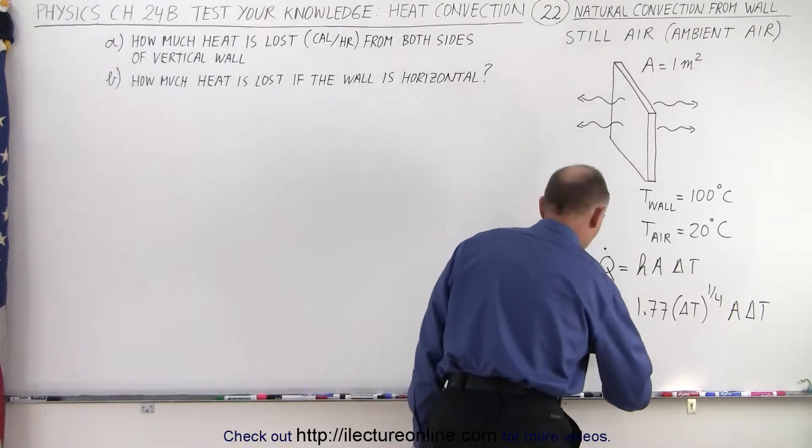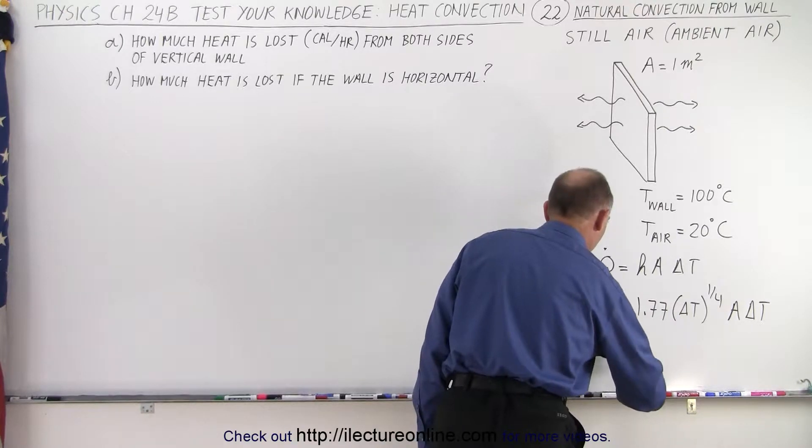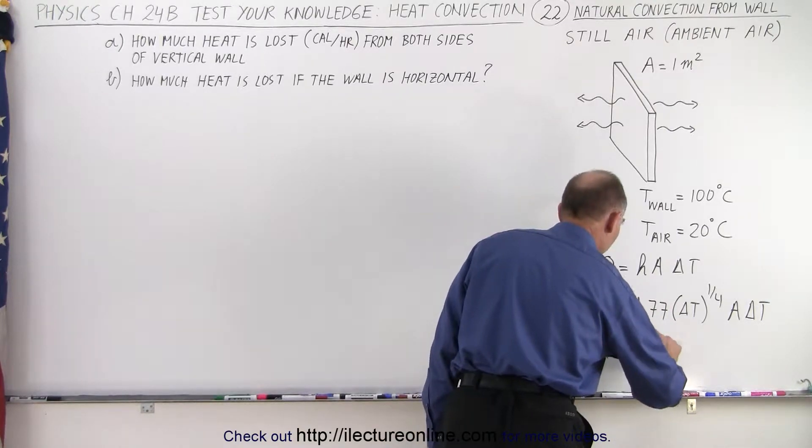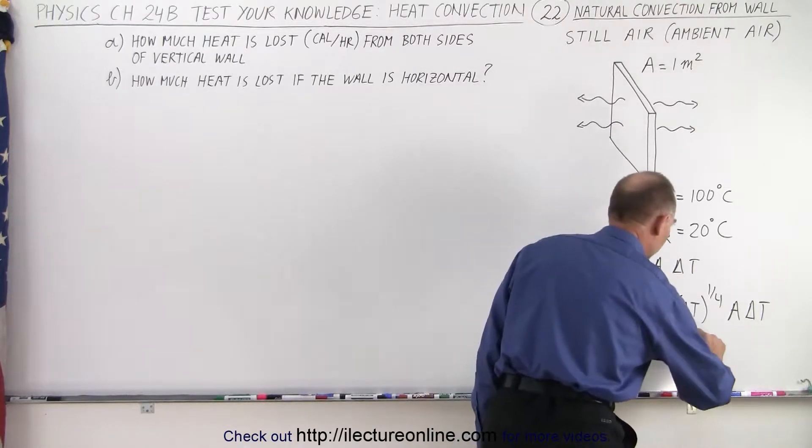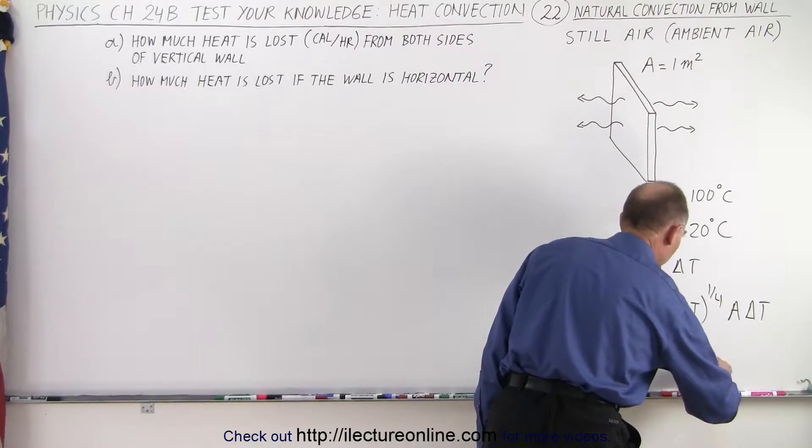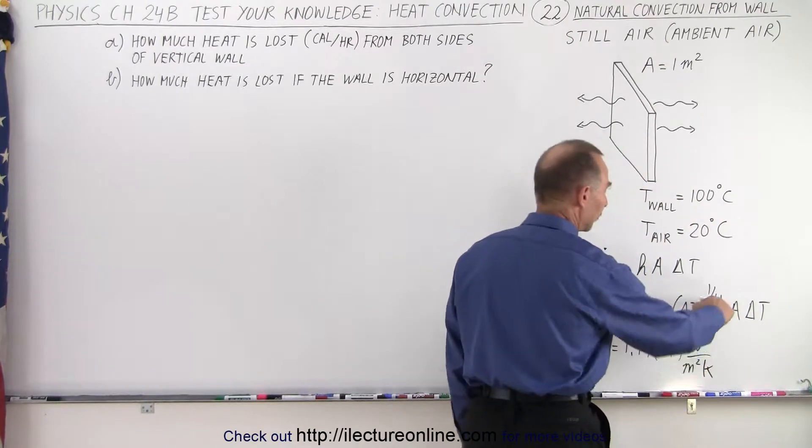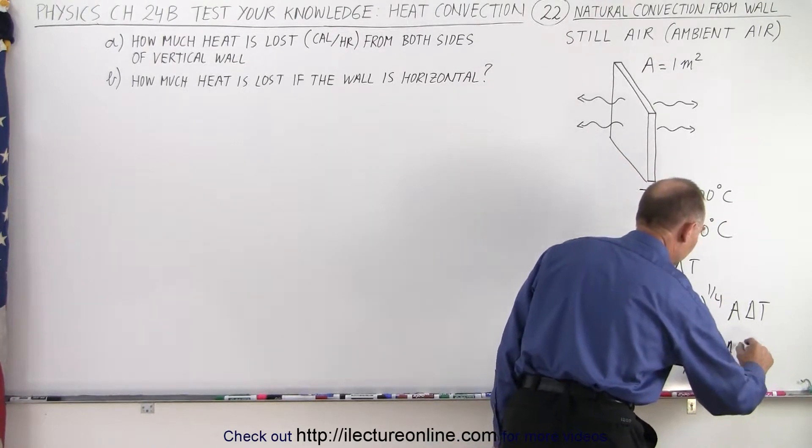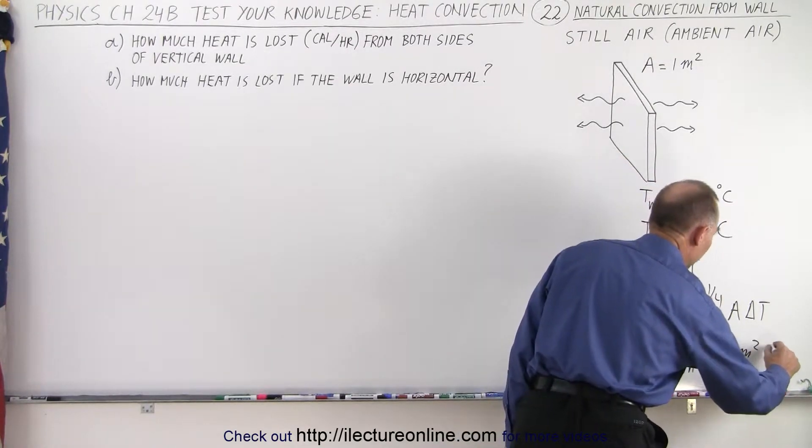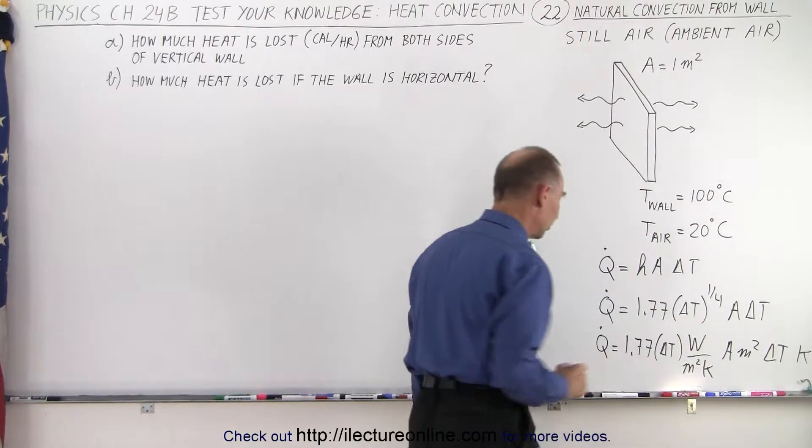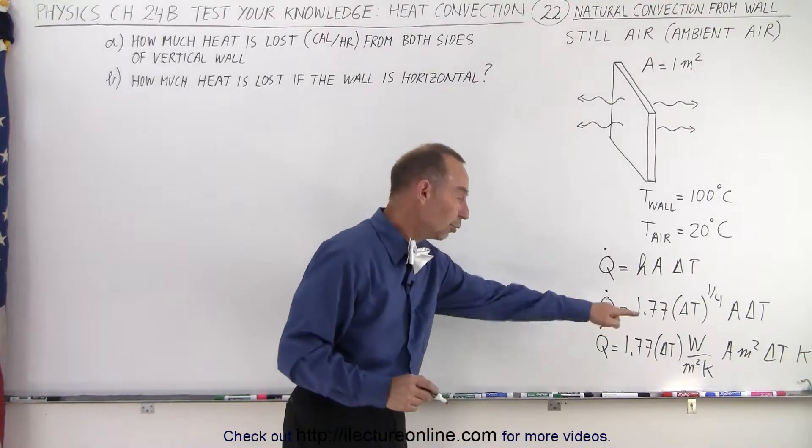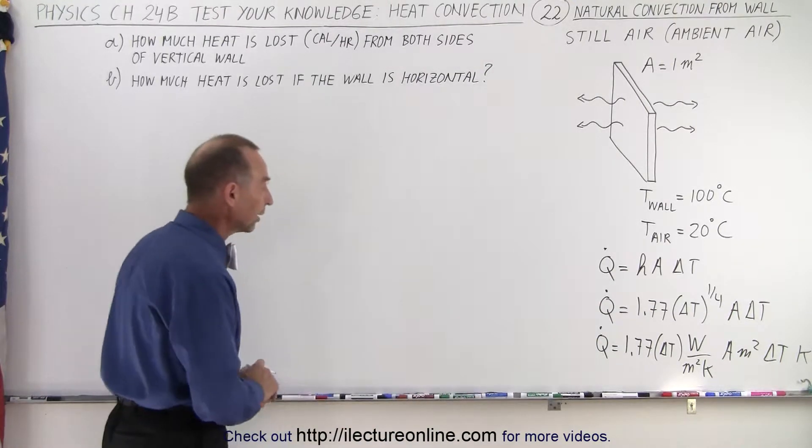So what we can say here is that units-wise, we have this is equal to 1.77 times delta T, that would be in terms of watts per square meter times Kelvin. Of course, we multiply it times area, which is in terms of square meters, and delta T, which is in terms of Kelvin. So notice that the units then for heat loss will be in terms of watts or joules per second.